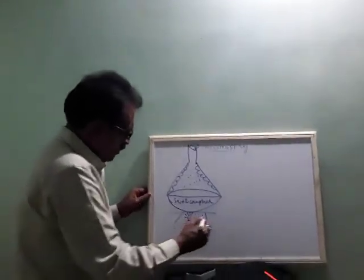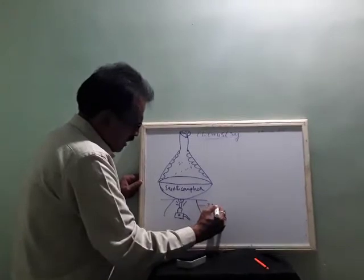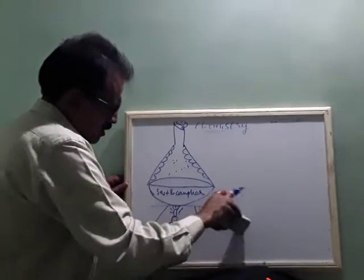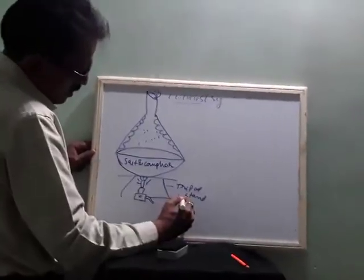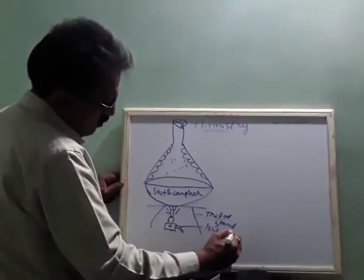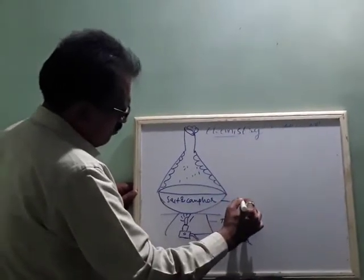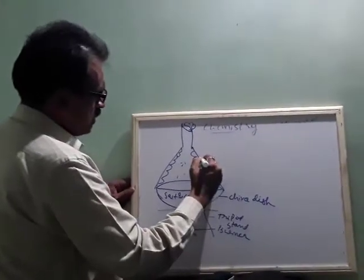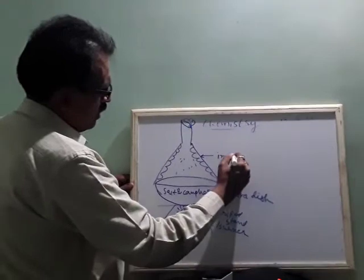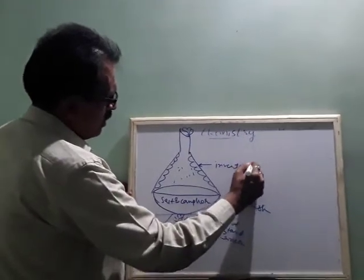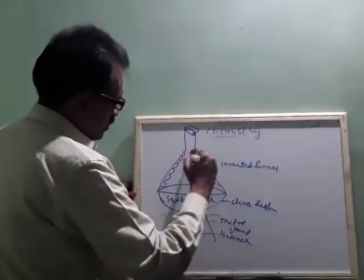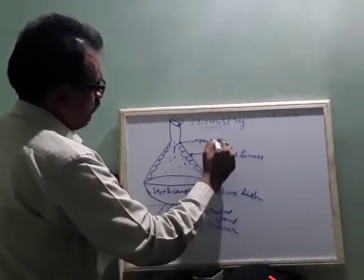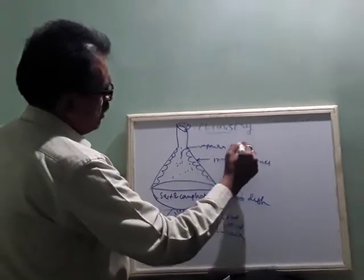If we label the diagram: this is a tripod stand, this is a Bunsen burner, this is a china dish, and this is the inverted funnel. These are the vapors of camphor — or vapors of ammonium chloride.